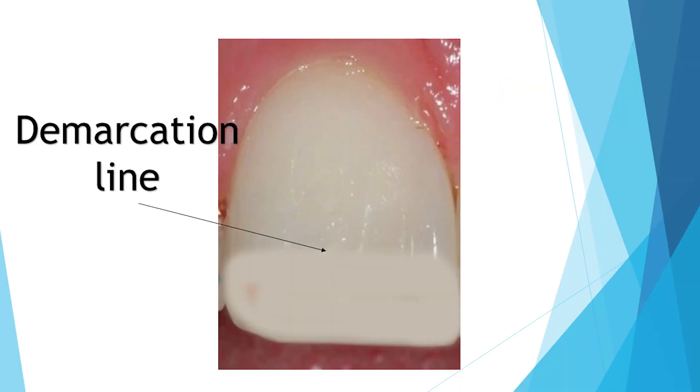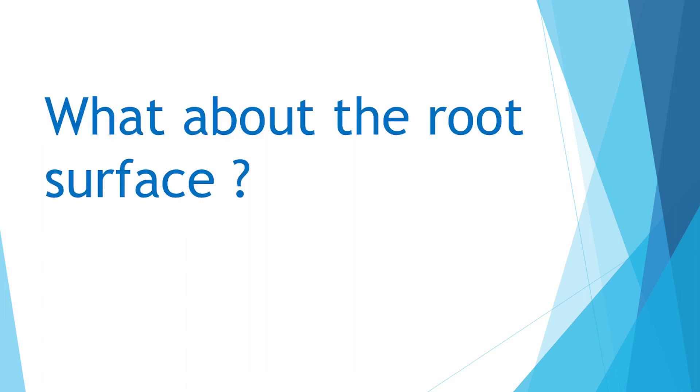The third important point is if you are doing a bevel in anterior teeth, you can get a very nice shade. Generally when students are learning initially, you can see a demarcation between the composite and tooth margin. That can be prevented by giving a nice bevel.